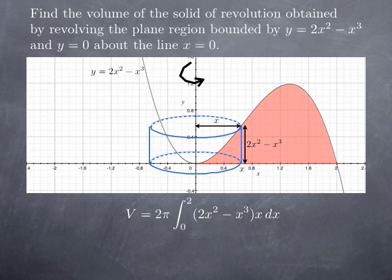Therefore, applying our formula for the volume, we get 2π times the integral from 0 to 2, because x ranges from 0 to 2 for that region. The integrand is the height 2x squared minus x cubed, multiplied by the radius x. Multiplying things through, we get 2π times the integral from 0 to 2 of 2x cubed minus x to the fourth.